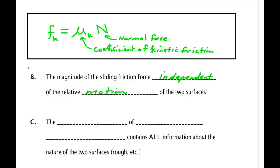Another equally interesting thing is that you might think that if an object were laid flat with a very large surface area versus having a taller block with a very small surface area, the large surface area would produce a bigger friction force since it would have more bumps rubbing against the table. It turns out that that's not true.